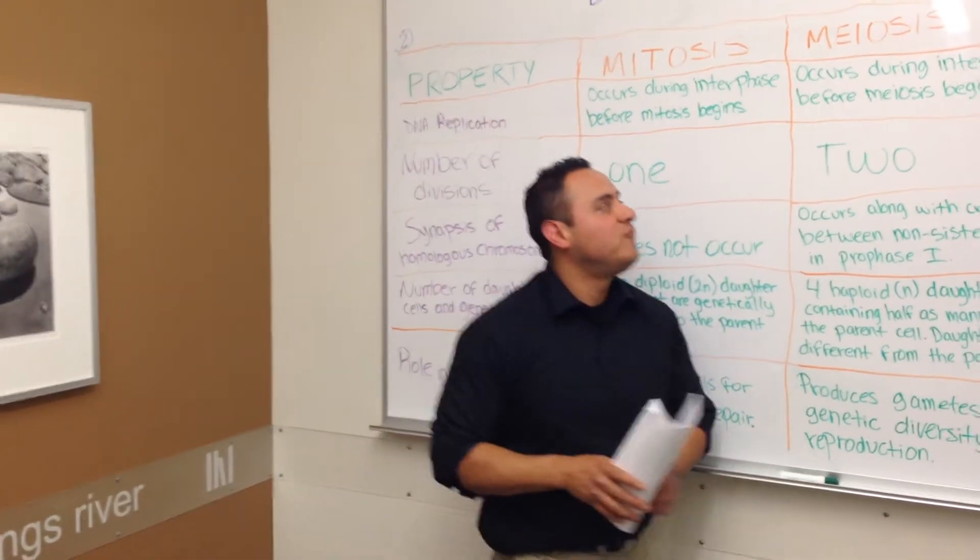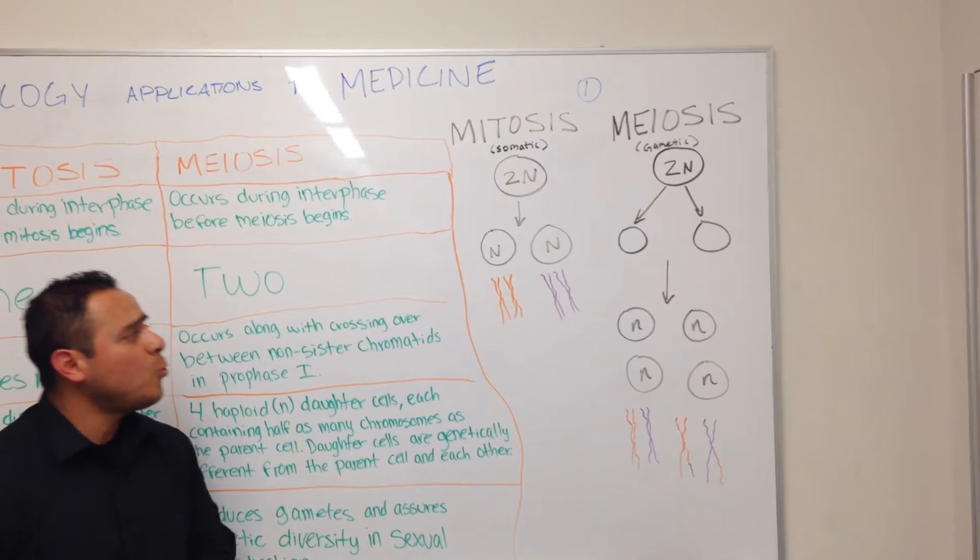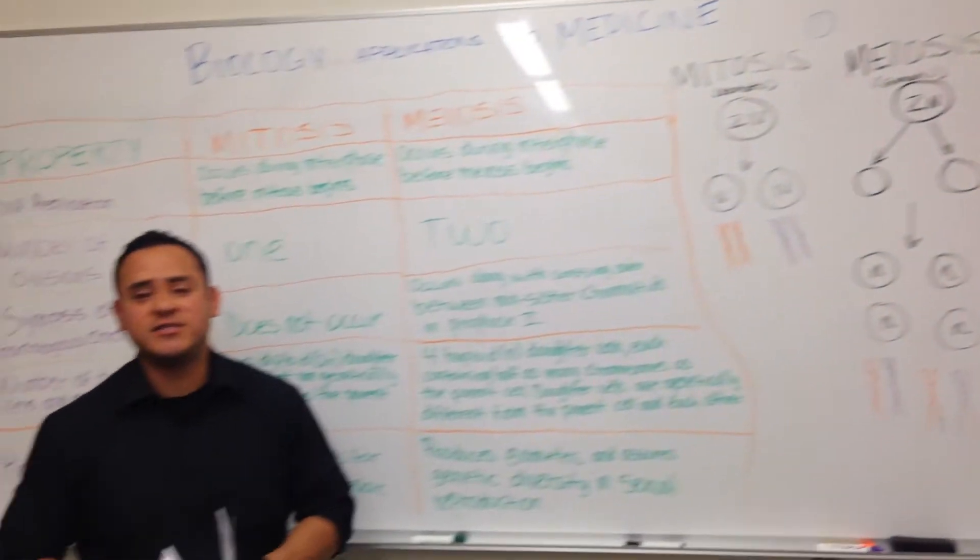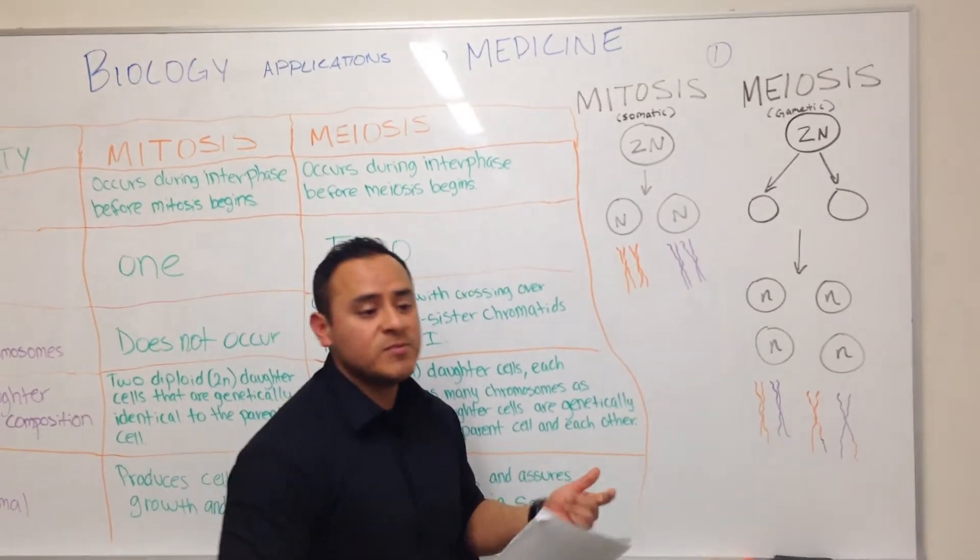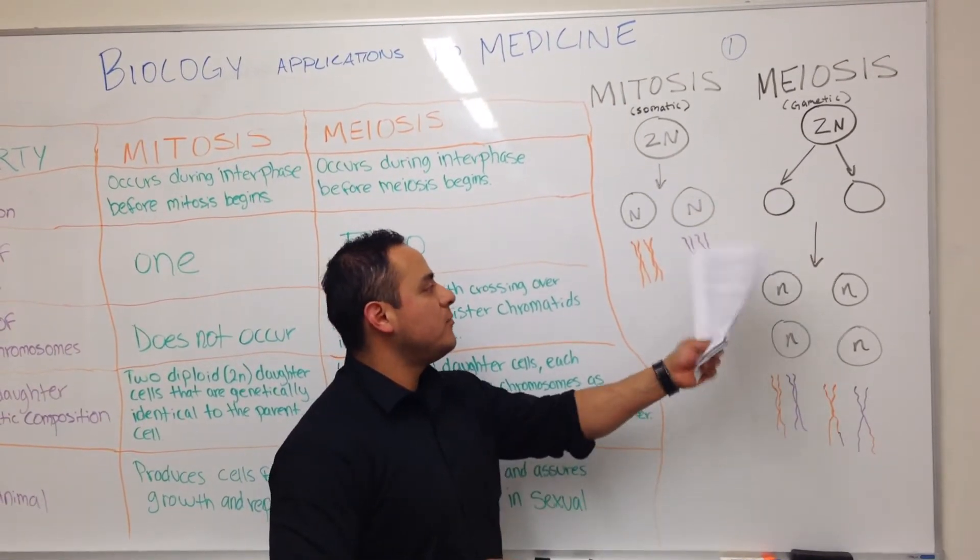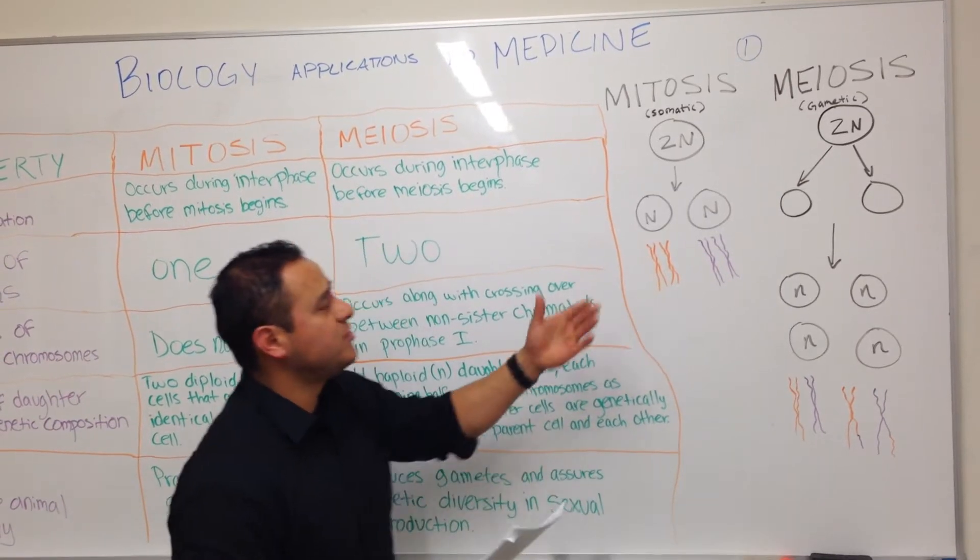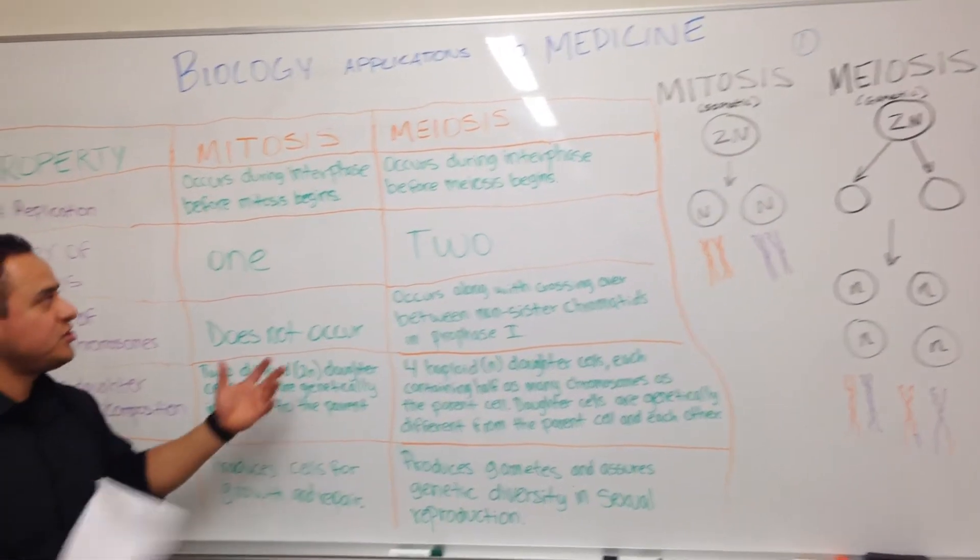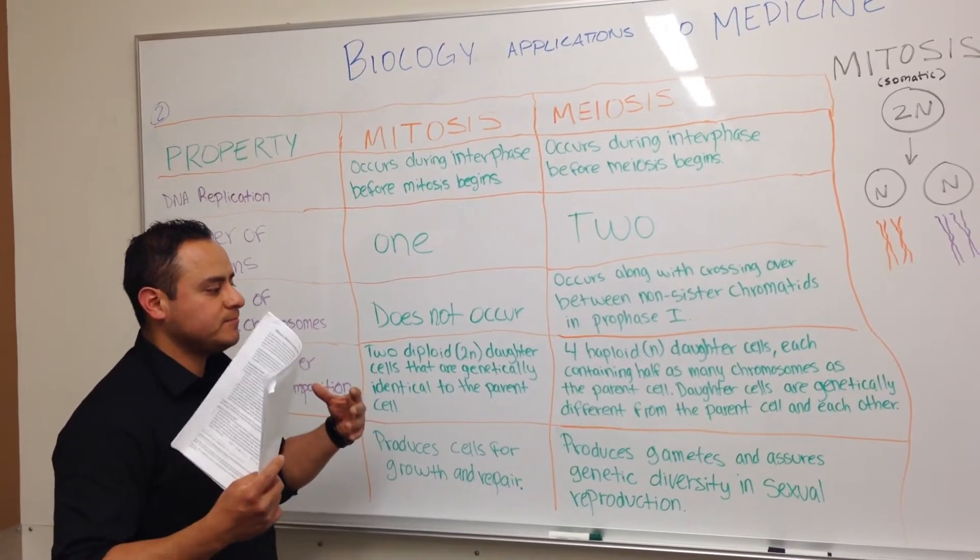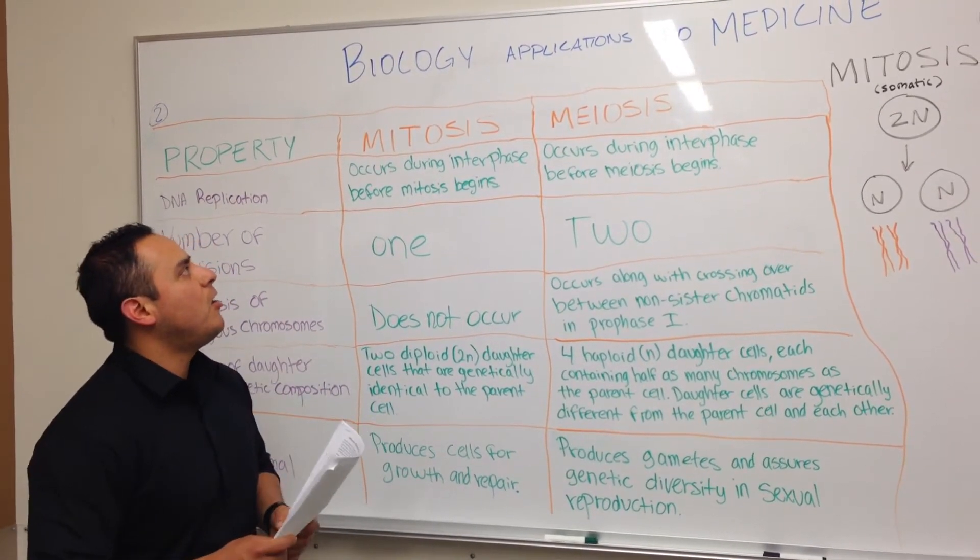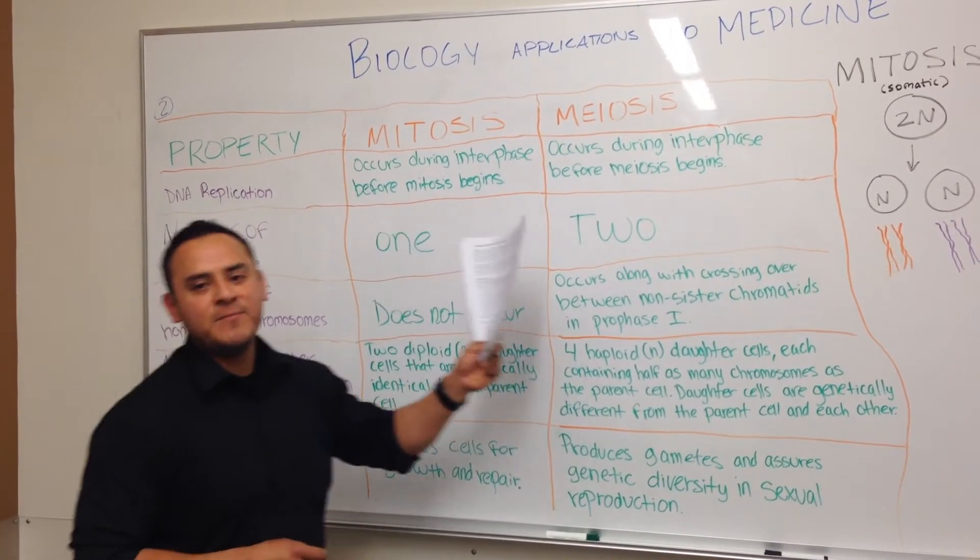So for mitosis, which is the physiological cells we're producing, what types of mutations would we expect to see if there are any deletions or insertions of chromosomes? And then for meiosis, we're going to be talking about the same approach. And to mesh this all together, what we're trying to explain are the applications biology has within medicine.